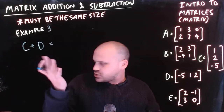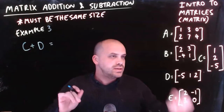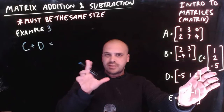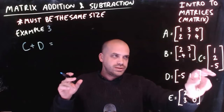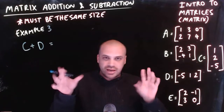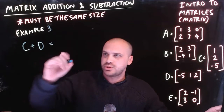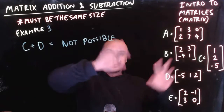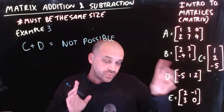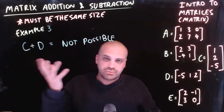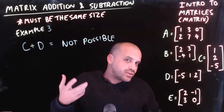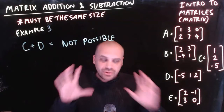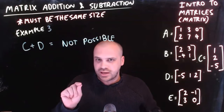Here's a bit of a trick question: adding matrix C plus D. Uh-oh — they're not the same size, not the same order. C is a 3 by 1 and D is a 1 by 3. We can't add those together because we can't match the elements. So we just write: not possible. As long as matrices are the same order, we can add them together; otherwise, we can't.